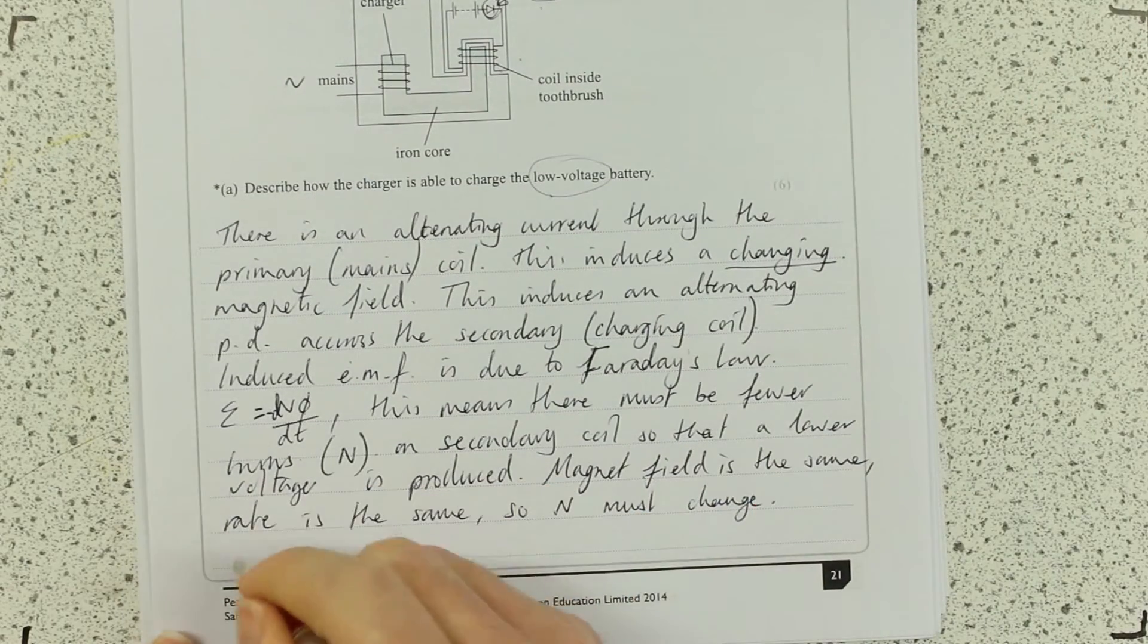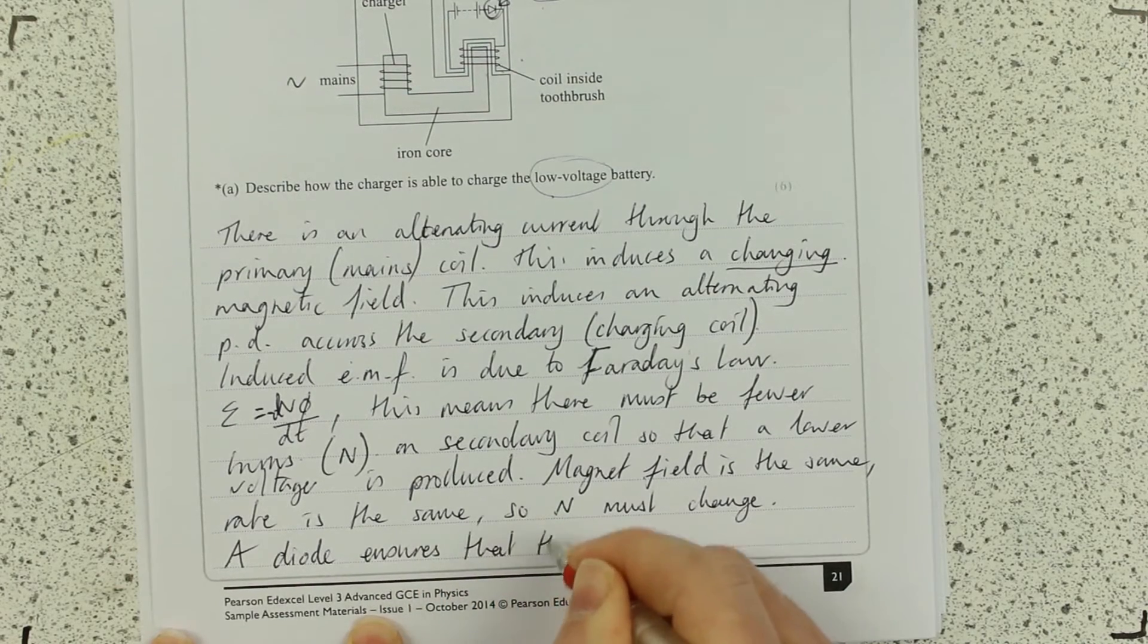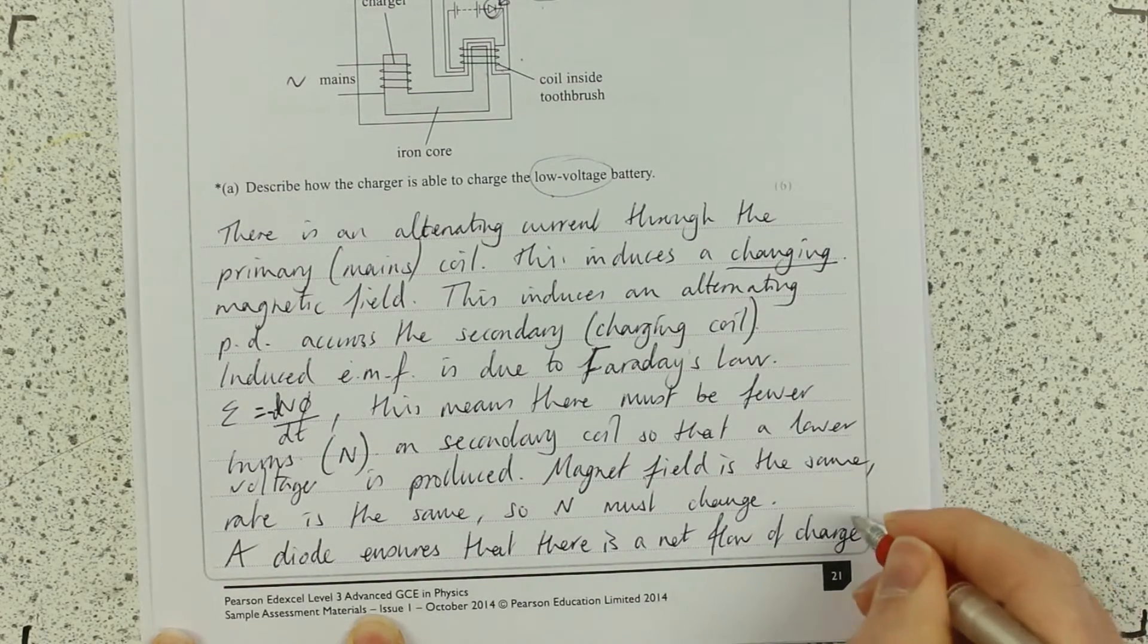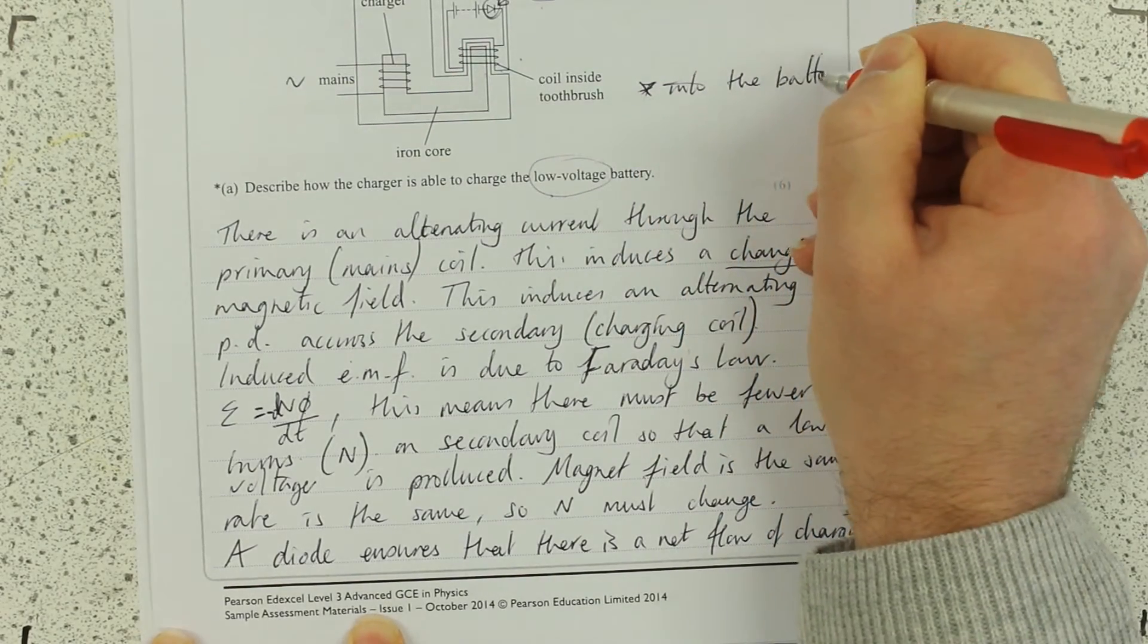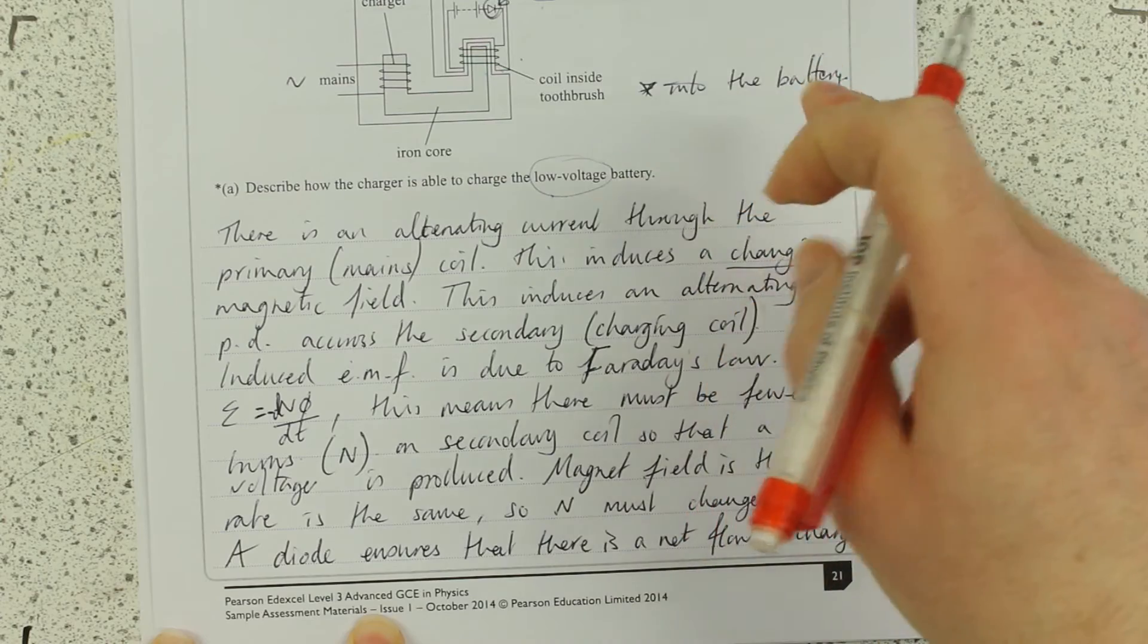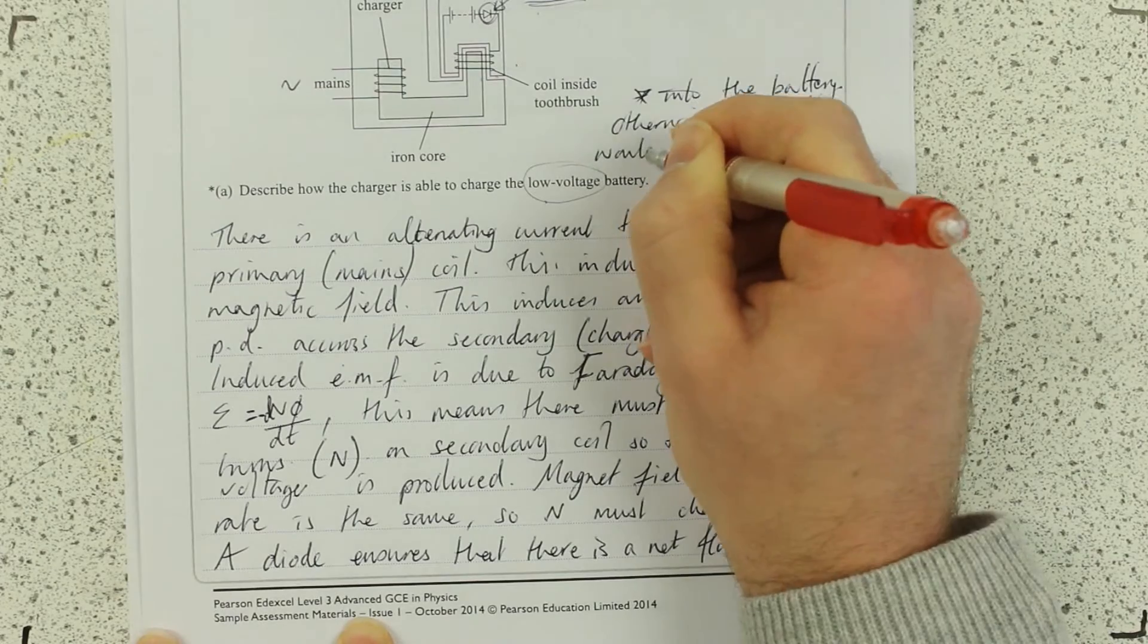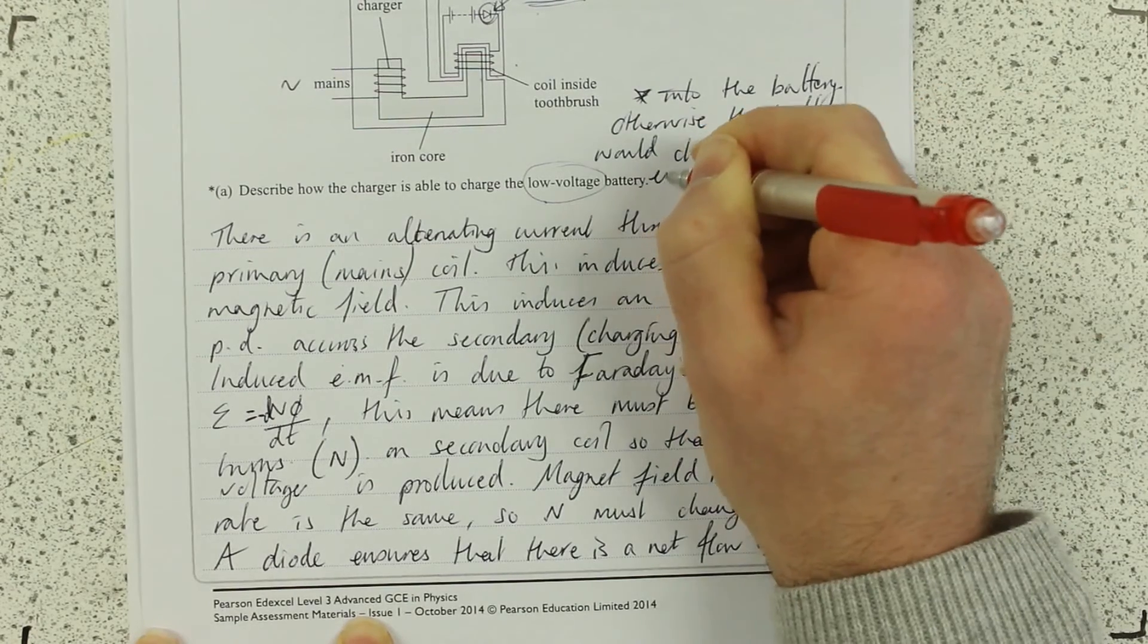So, a diode ensures that there is a net flow of charge into the battery. And where am I going to write this? I'll just put an asterisk. And just to cover myself, because it's a quality written communication, I'm going to write into the battery. Otherwise, the battery would discharge and would charge and discharge every cycle.